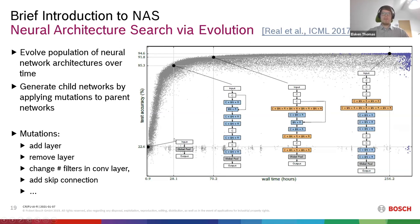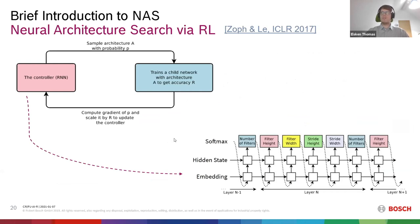Another class of methods uses reinforcement learning with a similar idea. Instead of mutations, a reinforcement learning controller proposes new architectures to test. In one paper, a recurrent neural network generates a string representing the neural network architecture. You train it and use the performance of the trained network as feedback to update the controller parameters via a reinforcement learning algorithm.